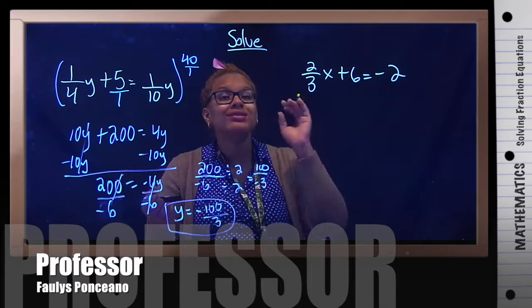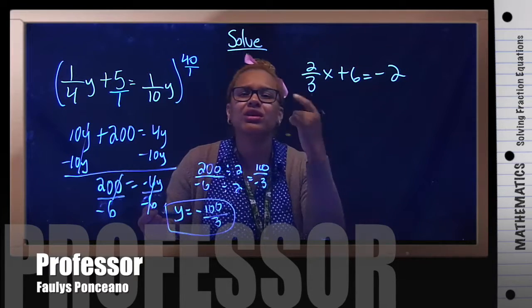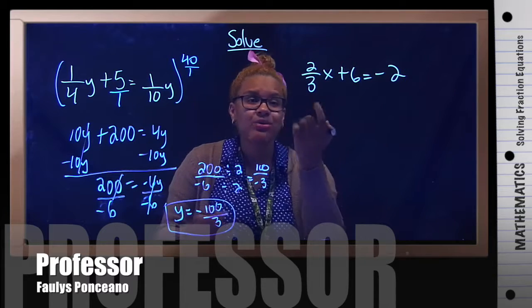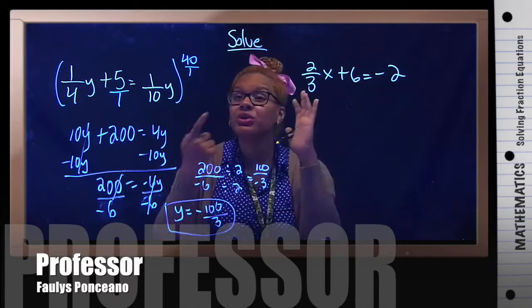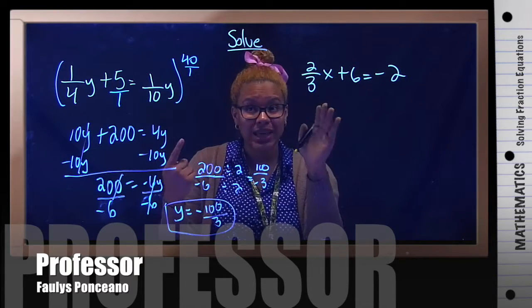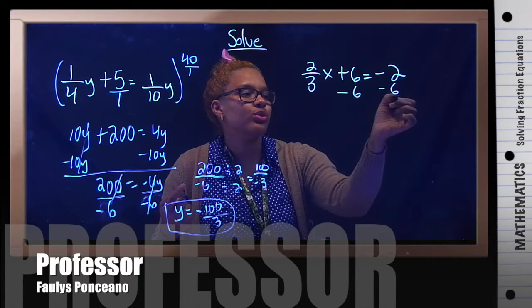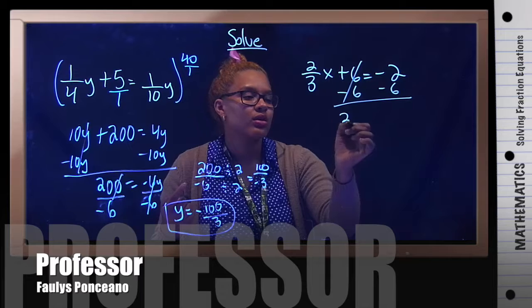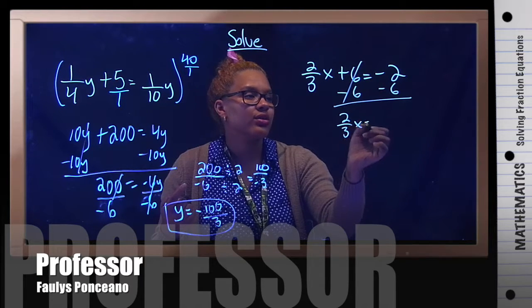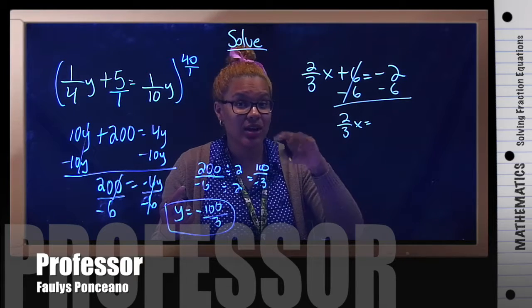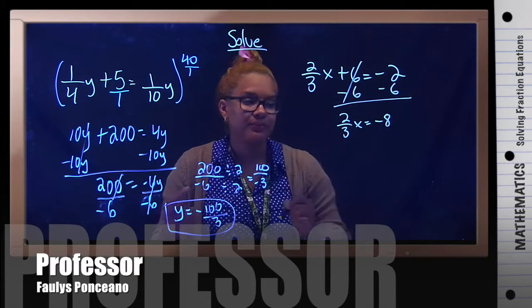I'm going to start, instead of getting rid of the fraction, because I only have one fraction. Here I have two, I only have one. I don't think it's going to be that much work. So I'm going to keep my fraction in this case. So I'm going to start by subtracting negative 6 to both sides. 2 thirds x equals negative 2 minus 6. You add and keep the sign, negative 8.